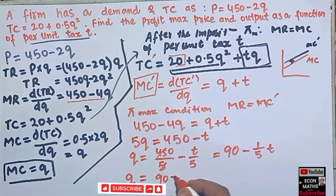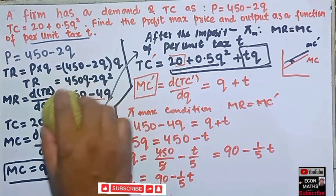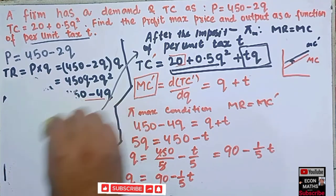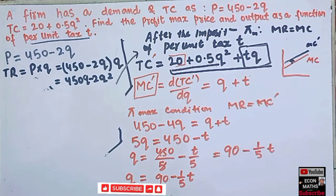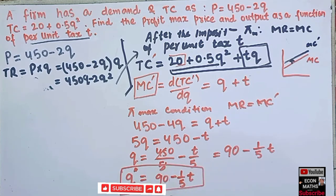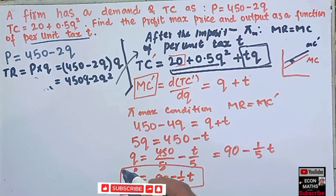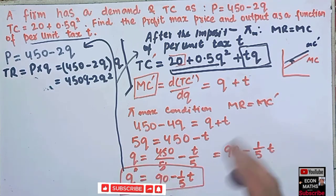So our profit-maximizing quantity is q* = 90 minus (1/5)t. Now to find the profit-maximizing price, we substitute this value of q into the inverse demand function p = 450 minus 2q, replacing q with (90 minus t/5) to get the profit-maximizing price after the imposition of per unit tax t.